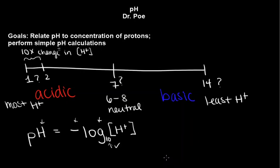For our Bronsted-Lowry definition of an acid, something that releases a lot of protons is going to make that solution really, really acidic. Whereas if it's picking up protons from the solution, it's going to be considered a base — it makes that solution basic because it's absorbing and removing protons from the solution.